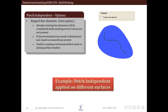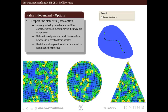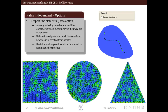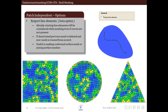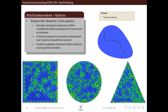Now we will see an example of patch independent applied on different surfaces. As you can see, the patch independent method with the respect line element activated is showing this particular change in the mesh type.